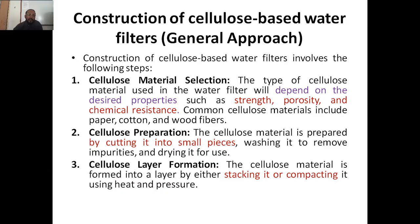Now let us look at the general approach to constructing cellulose-based water filters. Step 1 is selecting the cellulose material based on desired properties: strength, porosity, and chemical resistance. Common cellulose materials include paper, cotton, and wood fibers. Step 2 is cellulose preparation — cut the selected material into small pieces, wash it to remove impurities, and dry it for use.